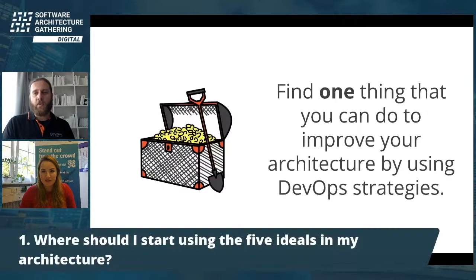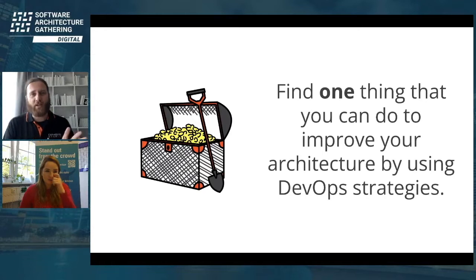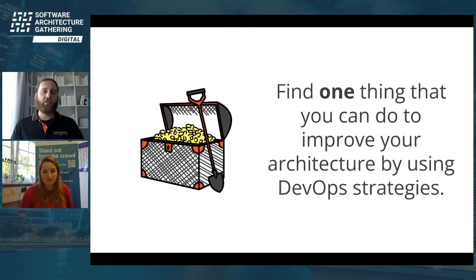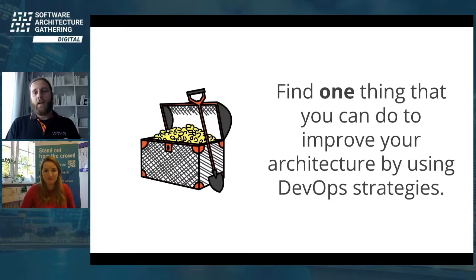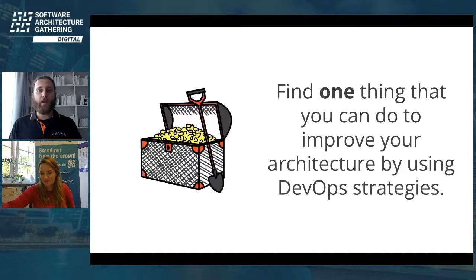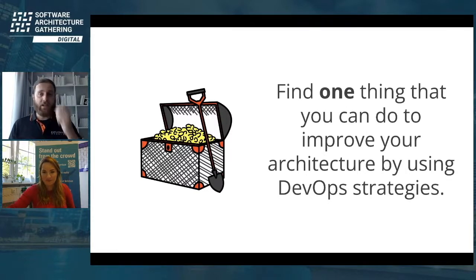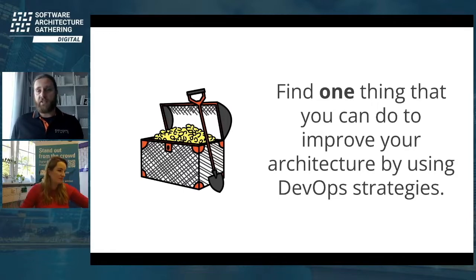The third question, and this is the most important one: find one thing that you can do to improve your architecture by using DevOps strategies. I strongly encourage you to think about that question and really write something down, because this should be your gold nugget — your one takeaway from this talk. I hope you have one thing that you can do to improve your architecture by using DevOps strategies.